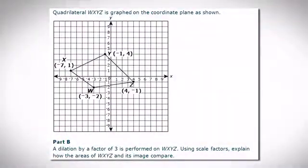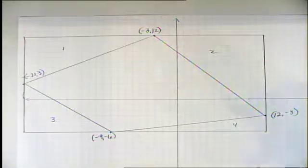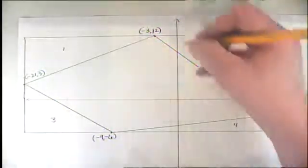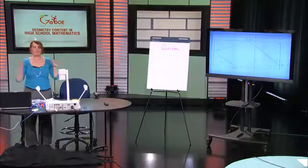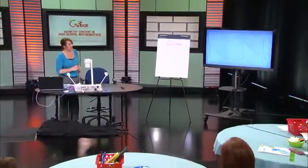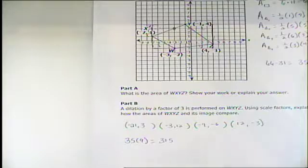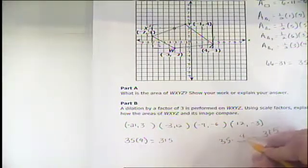To answer part B, we dilated the figure and made a larger image on graph paper. Dilation makes it larger because the scale factor was 3, and factor means multiply — so every coordinate had to be multiplied by 3. We got new coordinates, which should be labeled W prime, Y prime, Z prime to indicate the dilated figure. We used the same approach to calculate the areas of the new figure and found it to be 315. Comparing: 35 times what equals 315? The answer is 9, so it's 9 times larger.